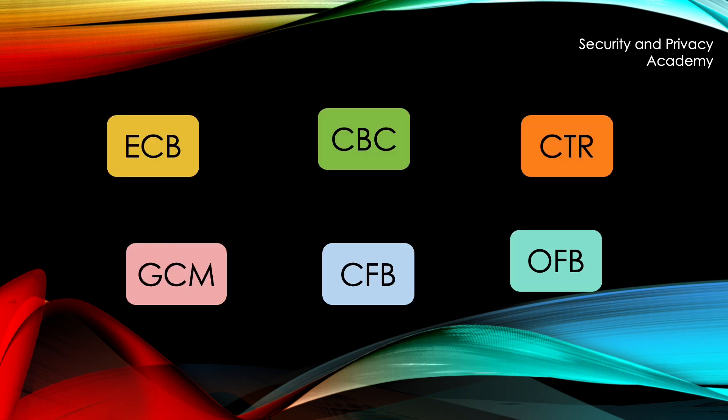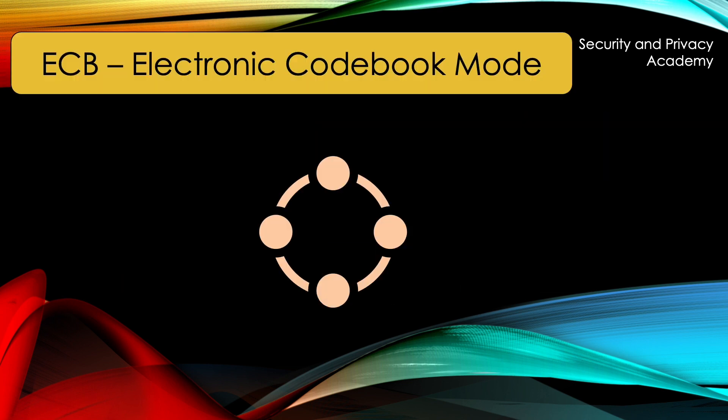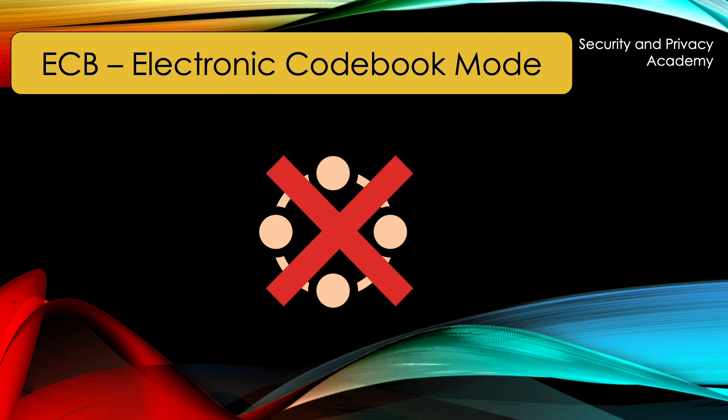First, electronic codebook mode. This isn't really a mode of operation, because each block is encrypted separately from the other blocks. That means that no diffusion takes place and same plaintexts become same ciphertexts.